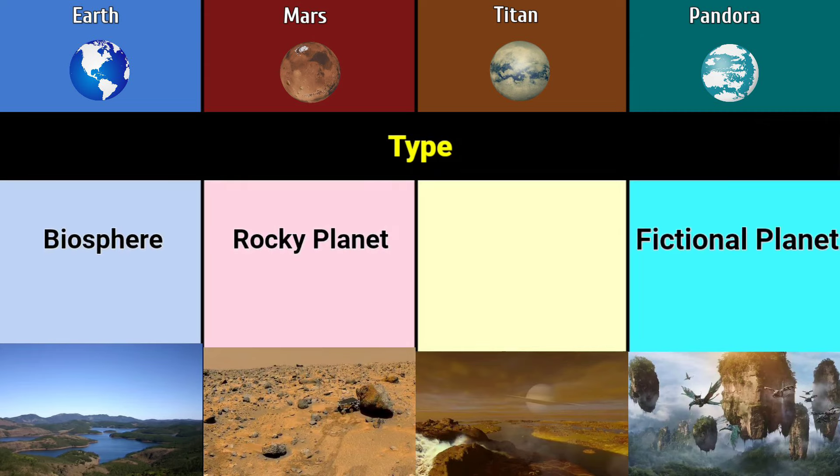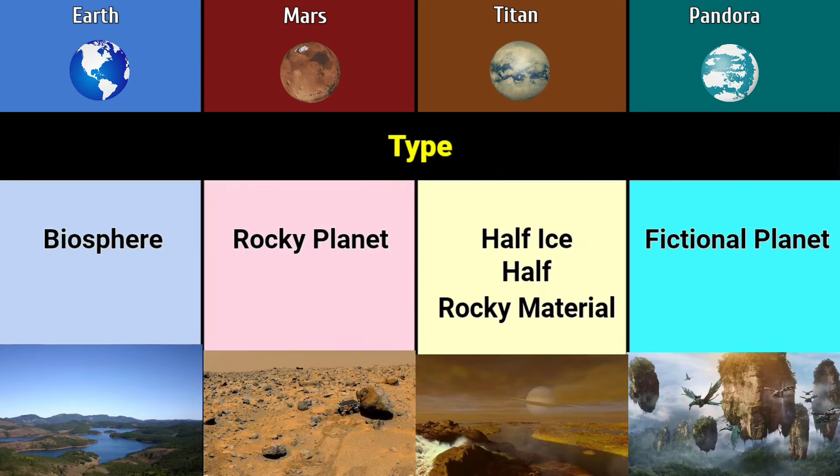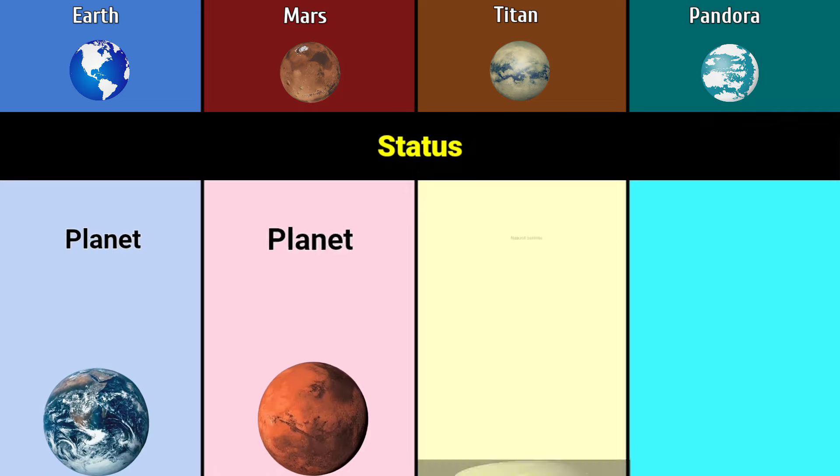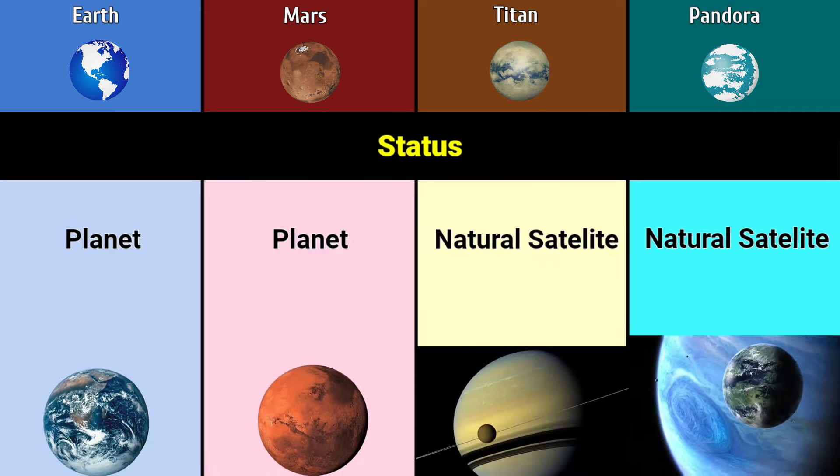Type: biosphere, rocky planet, fictional planet, half ice and half rocky material. Status: planet, planet, natural satellite, natural satellite.